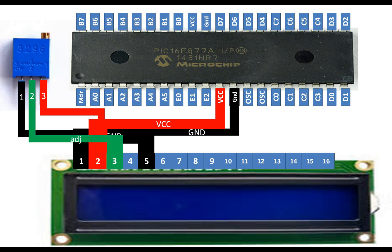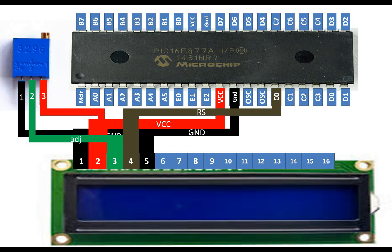Pin number 3 of the LCD goes to pin number 2 of the variable resistor — this is the adjustable pin. You can adjust the contrast of the LCD using this wiring. Now connect pin number 4 of the LCD with any available digital I/O pin of the PIC 16F877A. I am connecting it to C0, which is pin number 15. Pin 4 is the RS pin.